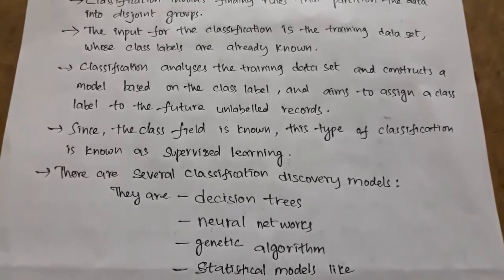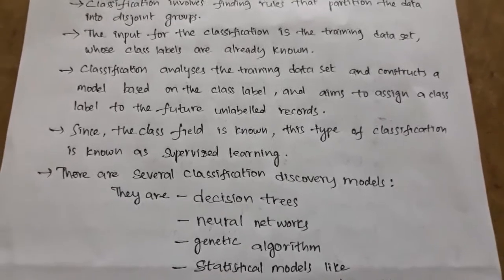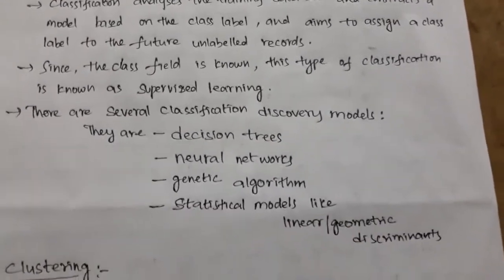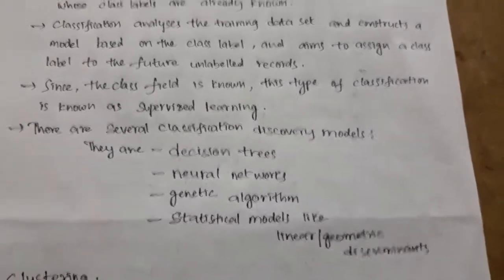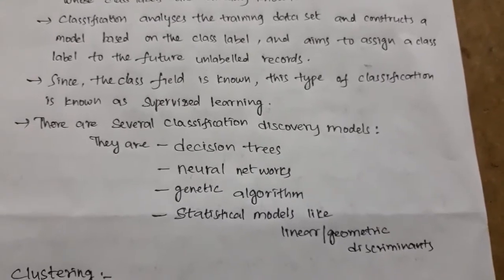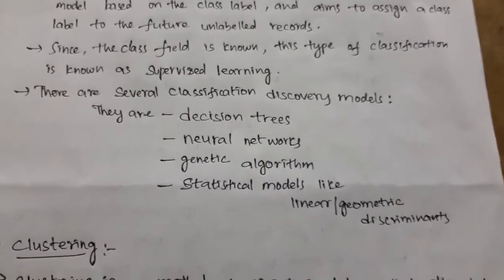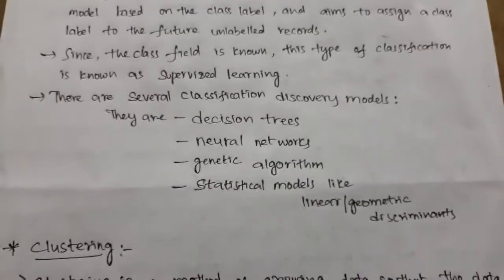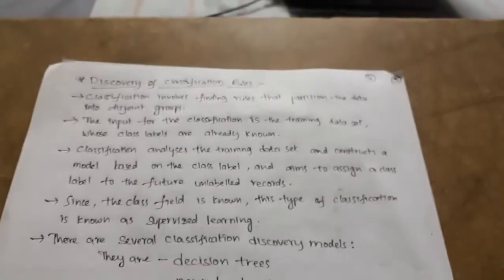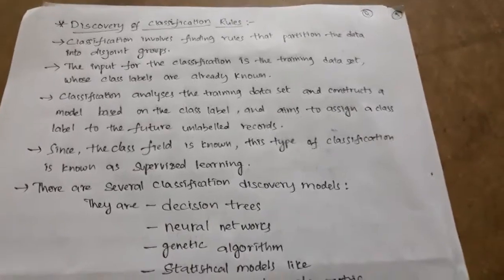Since the class field is known, this type of classification is known as supervised learning. Once the label is known, no need to go through another way — it is supervised only. Other than that, it is considered unsupervised learning. There are several classification discovery models: decision trees, neural networks, genetic algorithms, statistical models like linear and geometric discriminants — all related to discovery of classification rules.